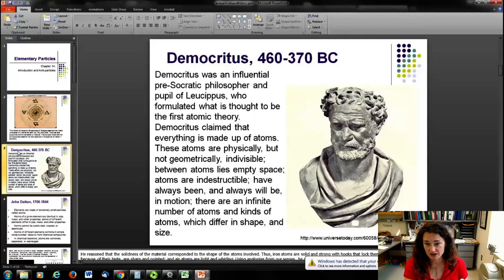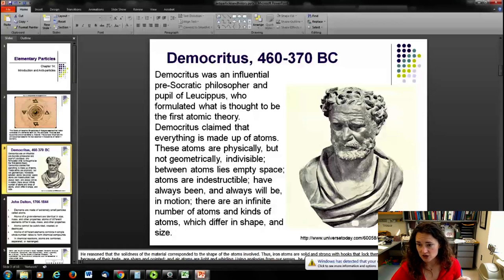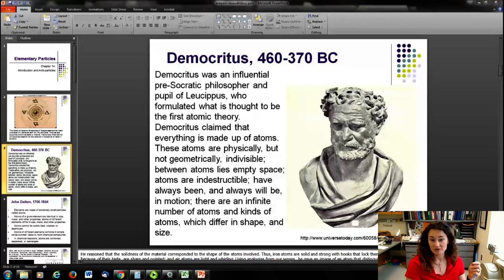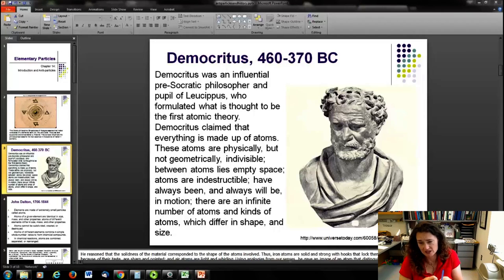This was a pretty good theory for the time. He reasoned that the solidness of the material actually corresponded to the shape of the atom involved. So he thought that iron atoms were solid and strong with these hooks in them that locked into a solid. And water atoms are smooth and slippery. And salt atoms, because their taste are sharp and pointed. Air atoms are light and whirling. And he used analogies from the four senses to give us an image of the atom that distinguish them from each other by the shape and size.